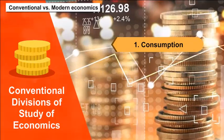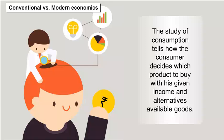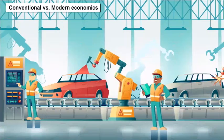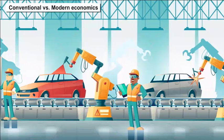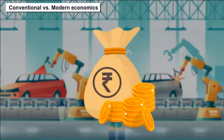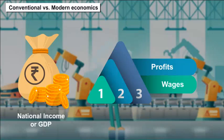Conventional divisions of the study of economics: The study of consumption tells how the consumer decides which product to buy with his given income and the alternatives available. The study of production helps us to know how the producer chooses what to produce and how to produce for the market. The study of distribution helps us to know how national income or GDP is distributed — wages, profits, and interests.